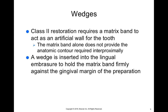We also use wedges, which are placed into the embrasure space — the black triangular space above the gingiva. The purpose is so that the material, whether composite, amalgam, or glass ionomer, will not get locked into the embrasure space. If material is lodged there, the patient won't be able to floss, which can lead to gingivitis and, if left untreated, periodontitis — attacking not only the gingiva but also the periodontal ligaments and the supporting bone.